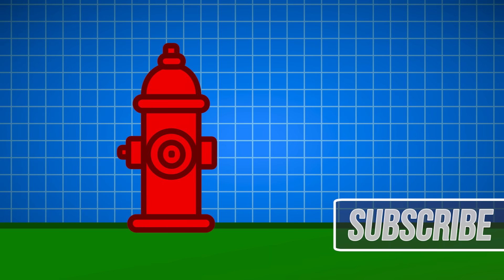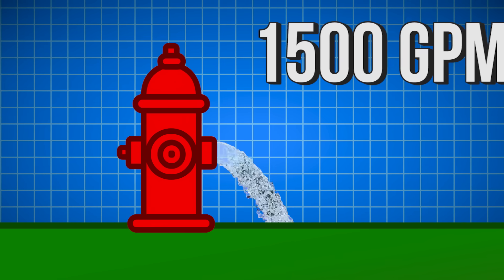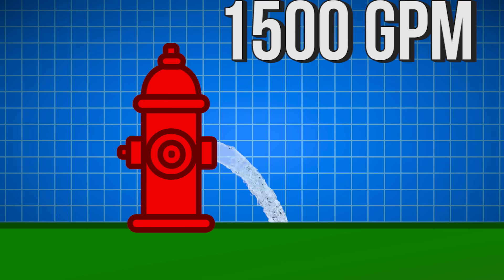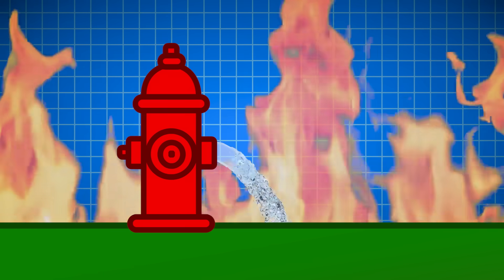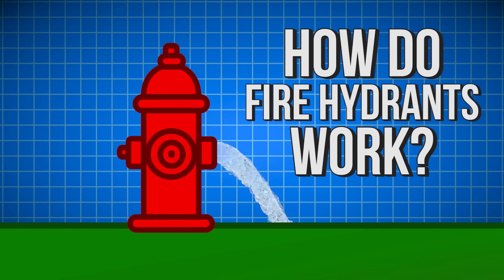Fire hydrants are all around us. These above ground pipe fittings can supply flows upwards of 1500 gallons per minute to save lives and put out fires across the world. We all know what fire hydrants do, but how exactly do they work?